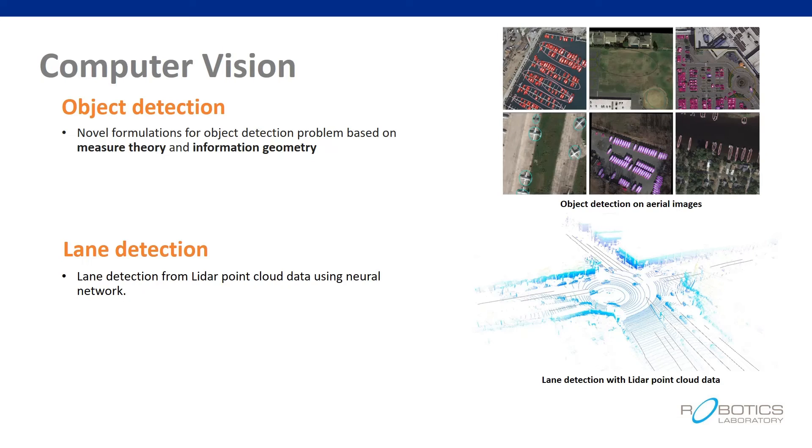Research on computer vision is being done actively, especially on object detection and vision inspection. First, we propose novel formulations for object detection problems based on measure theory and information geometry,